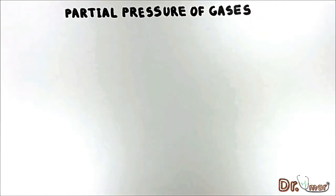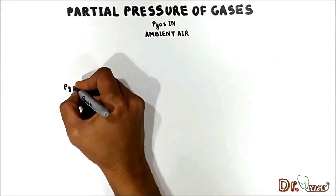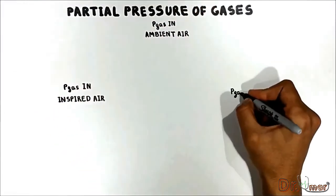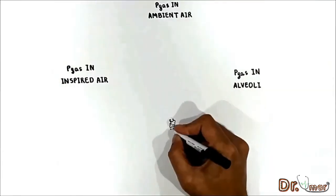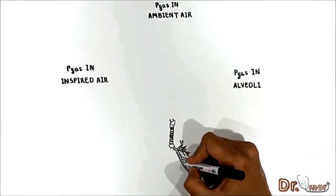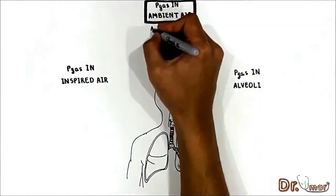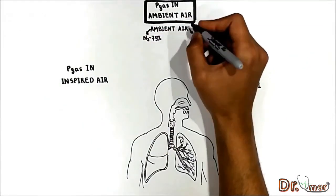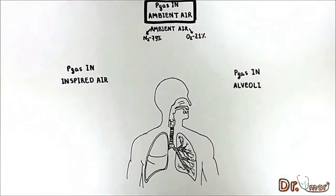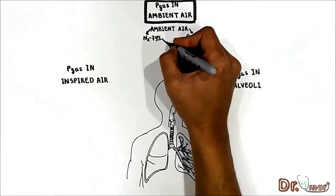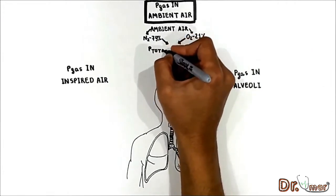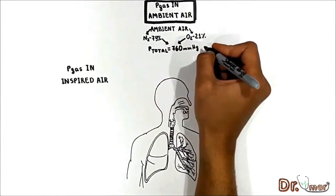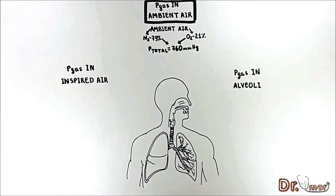We will see the partial pressure of gases in ambient air, in inspired air, and in alveoli. It is very important to note that ambient air has an approximate composition of 79% nitrogen and 21% oxygen. The total pressure of this mixture at sea level averages 760 mmHg. By convention, partial pressure of a gas is expressed in terms of its dry gas concentration.